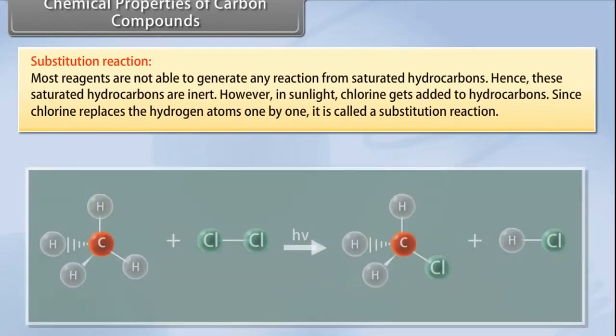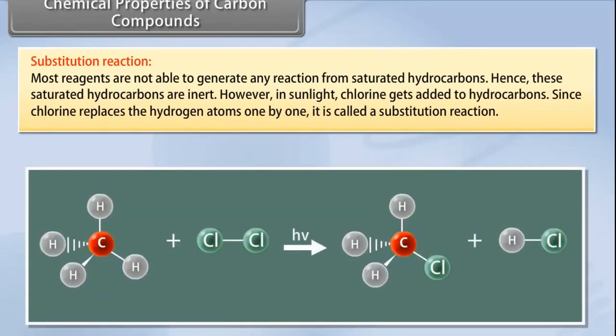Substitution reaction: Most reagents are not able to generate any reaction from saturated hydrocarbons. Hence, these saturated hydrocarbons are inert. However, in sunlight, chlorine gets added to hydrocarbons. Since chlorine replaces the hydrogen atoms one by one, it is called a substitution.